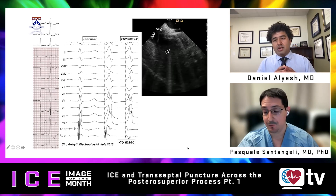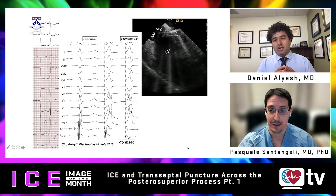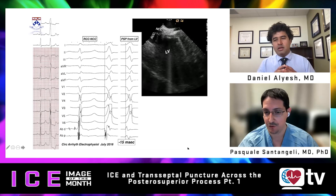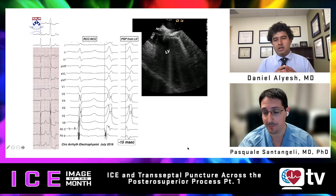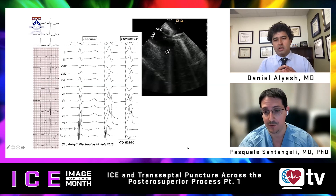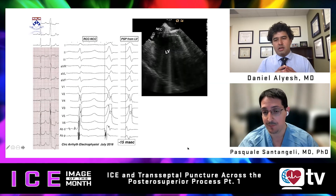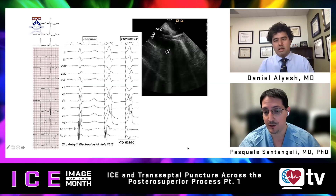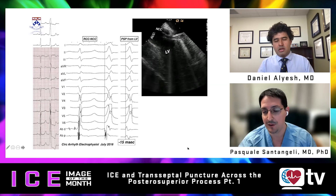To reconstruct the history of this ablation series: the idea initially came from my colleague Fermin Garcia, and I participated in the study after his initial description. This first case is where we realized there are arrhythmias originating from a region called the inferior septal process — or posterior superior process — of the left ventricle.